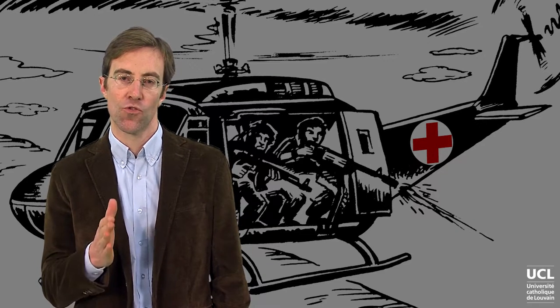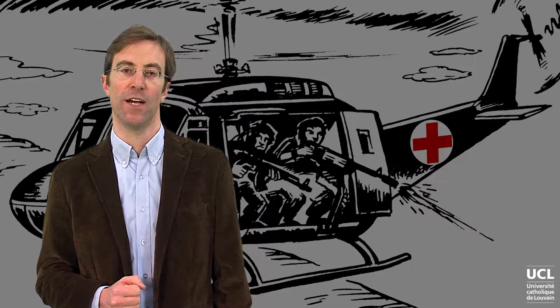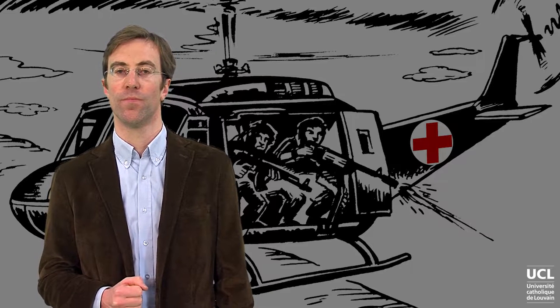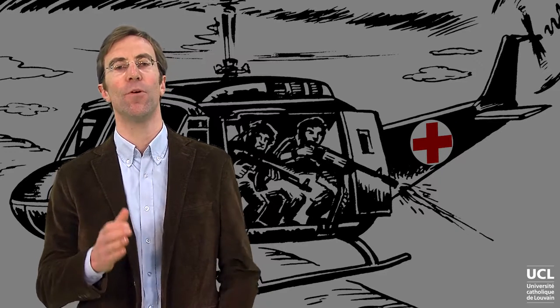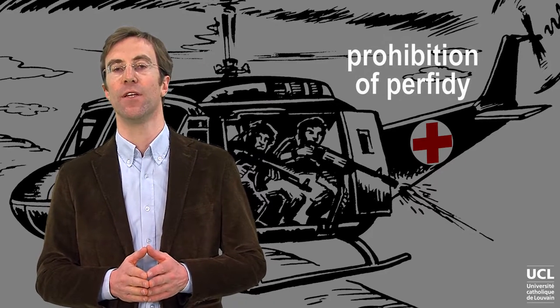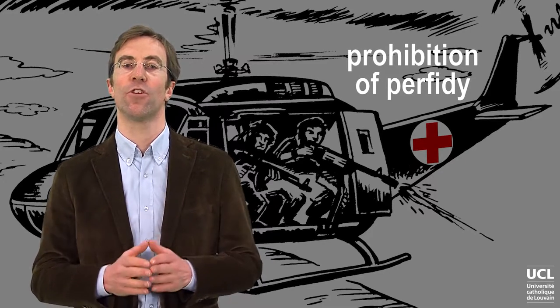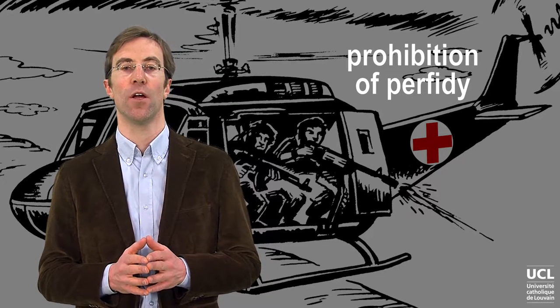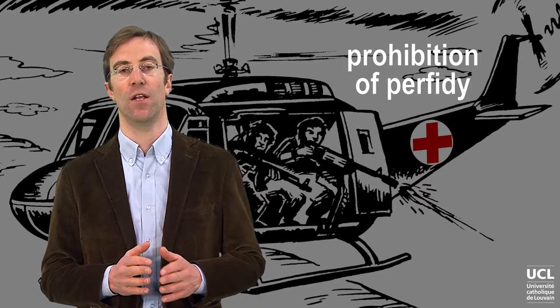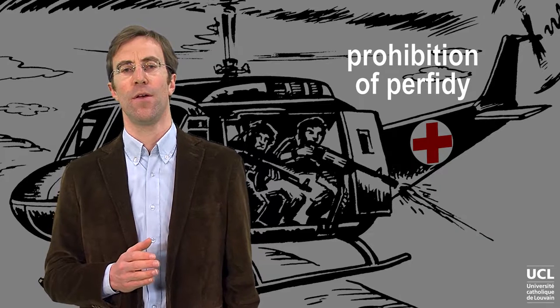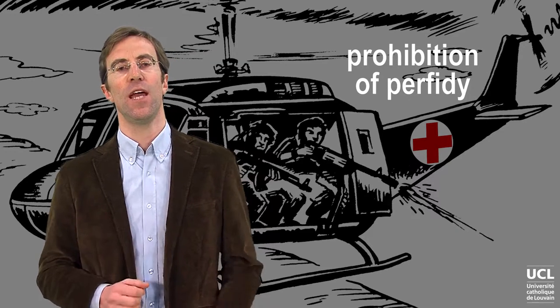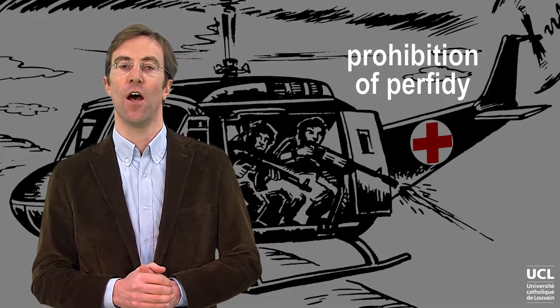Respect for IHL is only possible if belligerents trust their adversary when they rely on the protection afforded by that law. The purpose of the prohibition of perfidy is to avoid the breaking of such trust and any answering adverse consequences for IHL. Perfidy is a specific type of deception of the enemy.